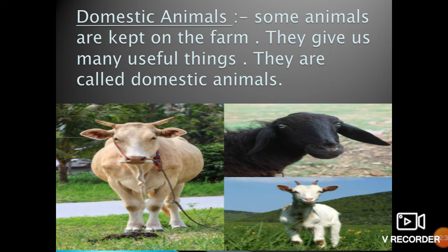Domestic animals are very useful for us. Like the cow — cow is a domestic animal and it is very useful. Cow gives us milk, and the milk of a cow is full of nutrients. We must drink milk. Cow's dung is also very useful; we use it for agriculture and fuel.